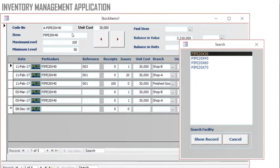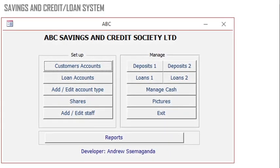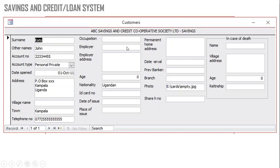You can use Access in a savings and credit or loan system where you have customers with loan accounts. They can be saving money. You can have buttons that enable you to capture their deposits and so on. You can upload their pictures and capture information on savings and the credit or loan system.